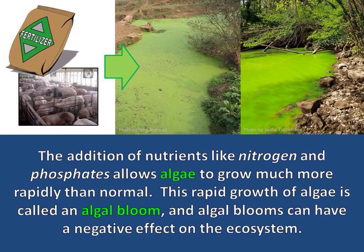The addition of nutrients like nitrogen and phosphates allow algae to grow much more rapidly than normal. This rapid growth of algae is called an algal bloom, and algal blooms can have a negative effect on the ecosystem.